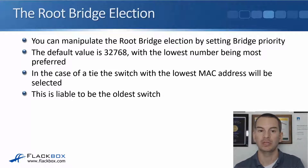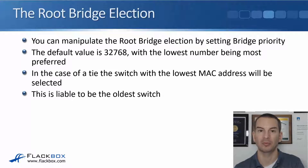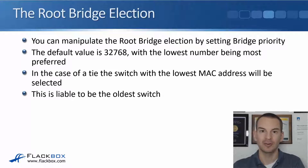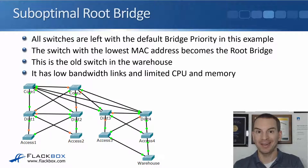The default value is 32768 and the lowest number is preferred. In the case of a tie, the switch with the lowest MAC address will be selected. So if you do not manually set the bridge priority on your switches, they're all going to default to 32768 and the switch with the lowest MAC address will be the root bridge. And that is liable to be the oldest switch in your network. Whenever Cisco make a new switch, they're going to increment the MAC address, so the lowest MAC address is probably going to be the oldest switch.